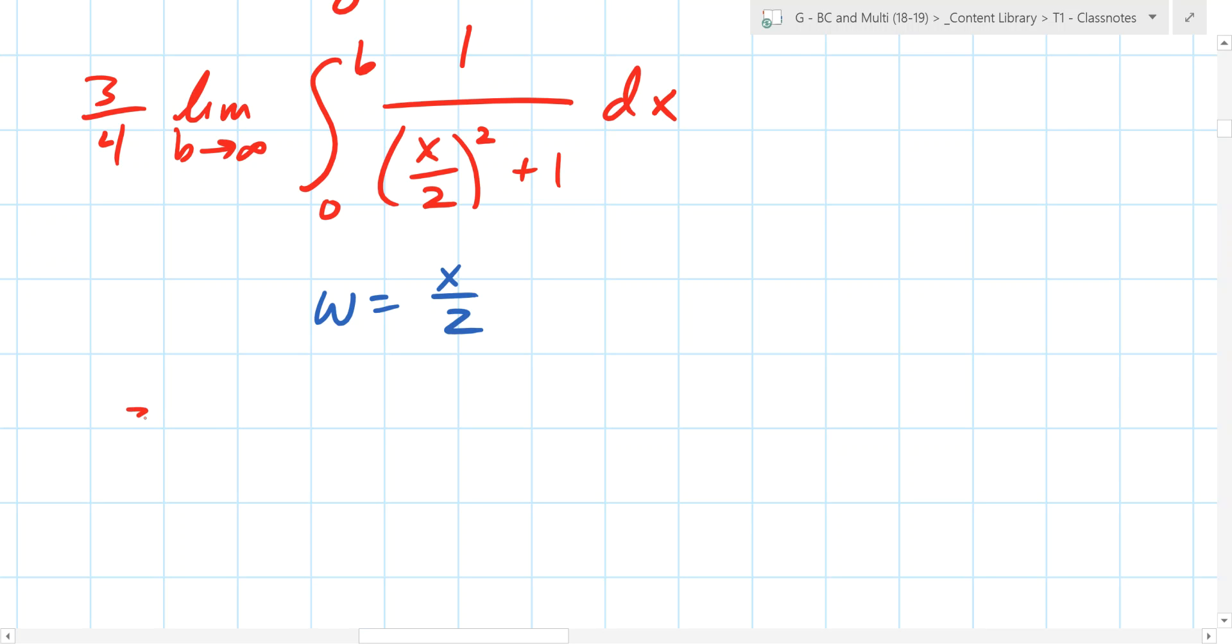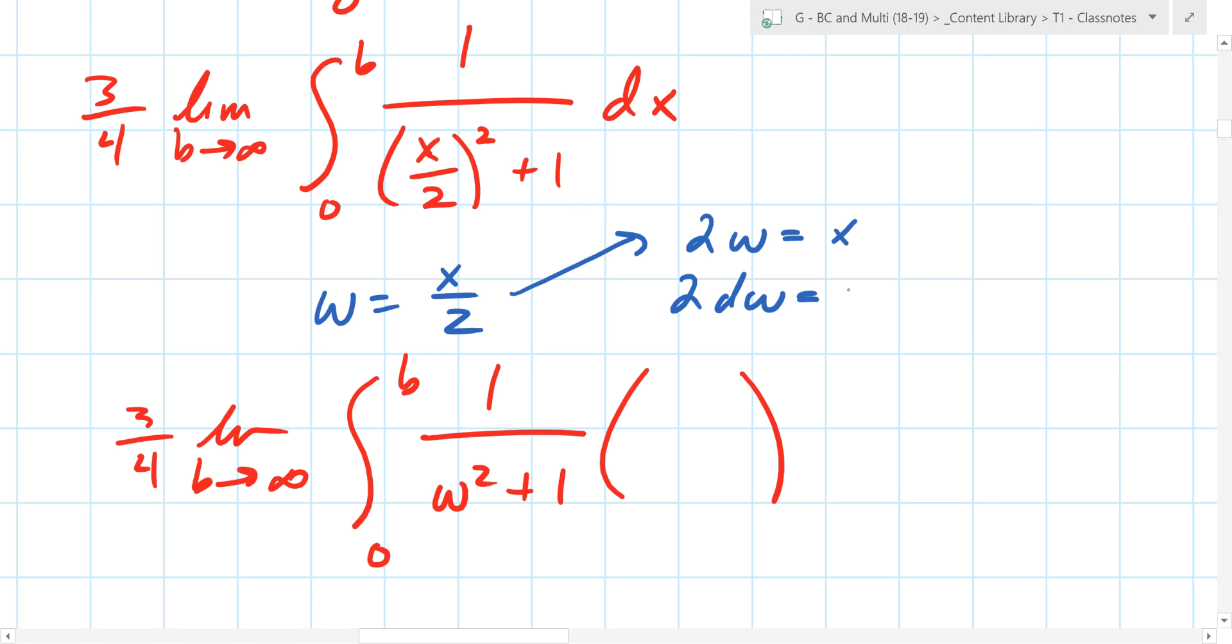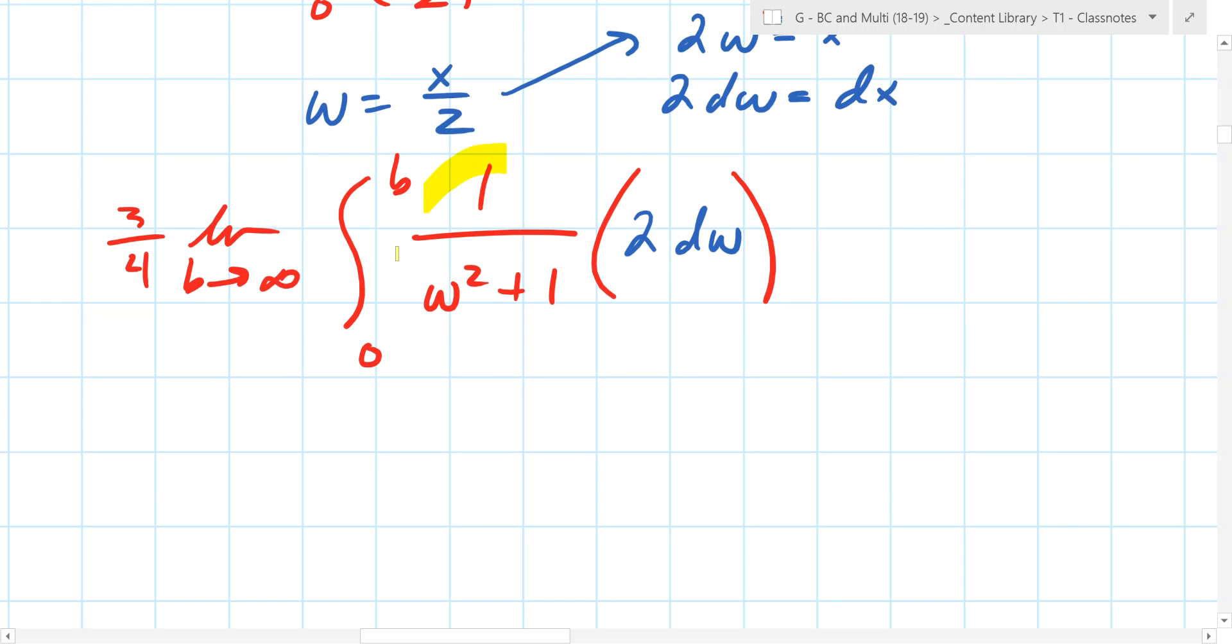We have three-fourths limit as B goes to infinity, and then what do we have? The integral from 0 to B of 1 over w squared plus 1 times what? This is where you have to be very careful. Can you just keep dx in there? No, we're not into multivariable. You need one variable in your integral. B is a constant effectively. So in this case, what does this mean? It means that 2w is equal to x, so 2dw is equal to dx. So instead of dx, what do I write? 2dw. Do you see that right there? That's super important. You need to actually change that differential.